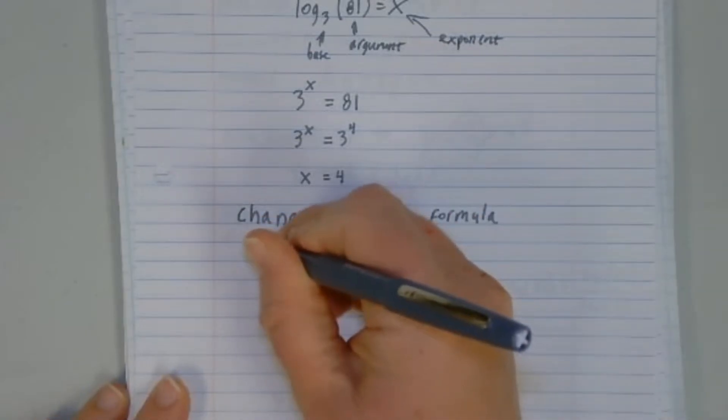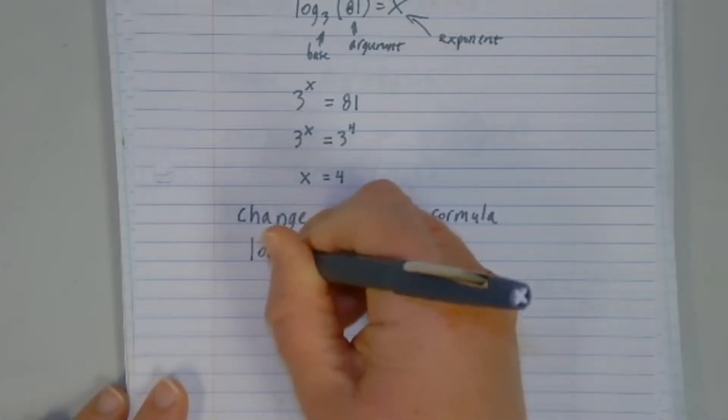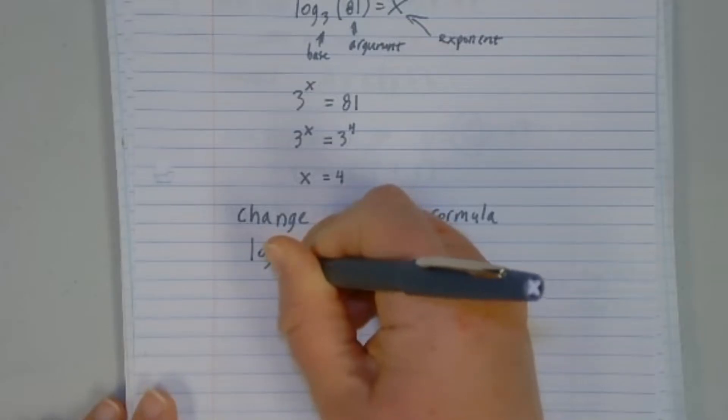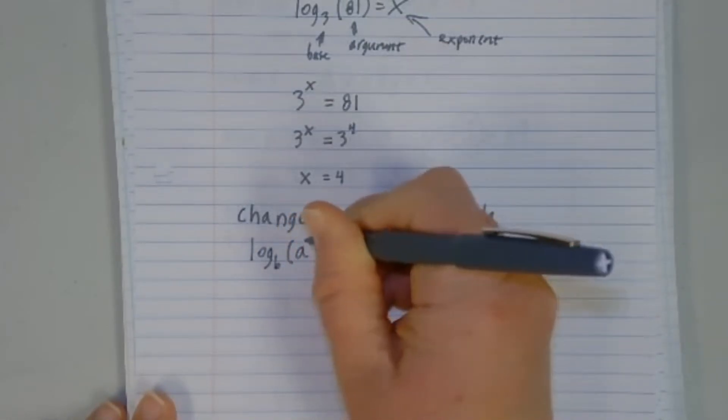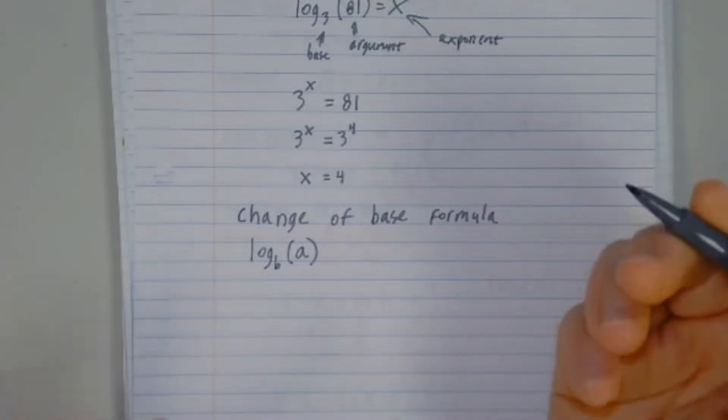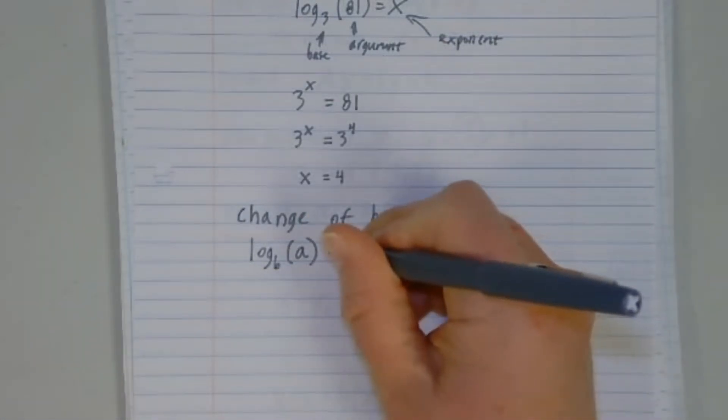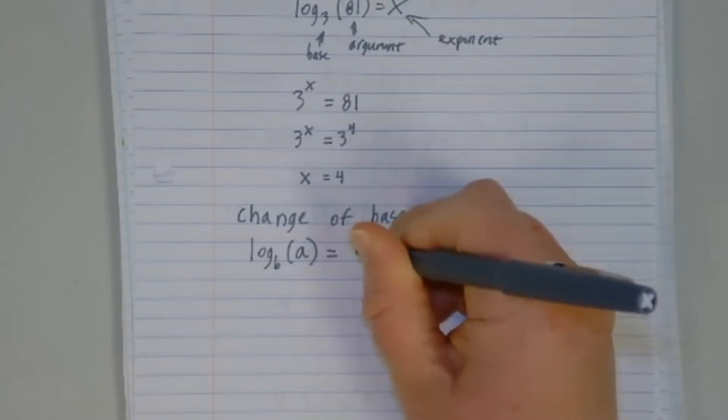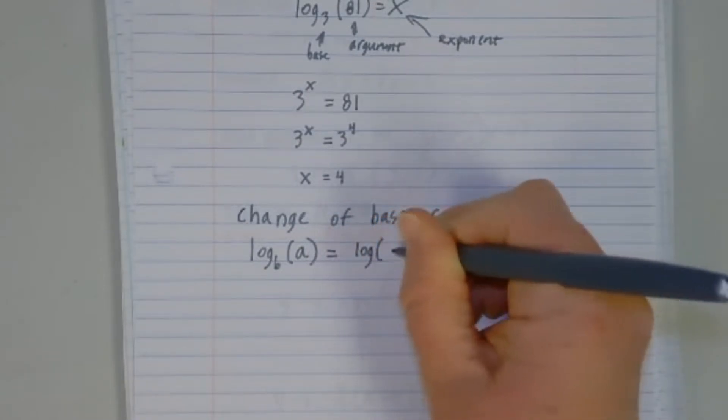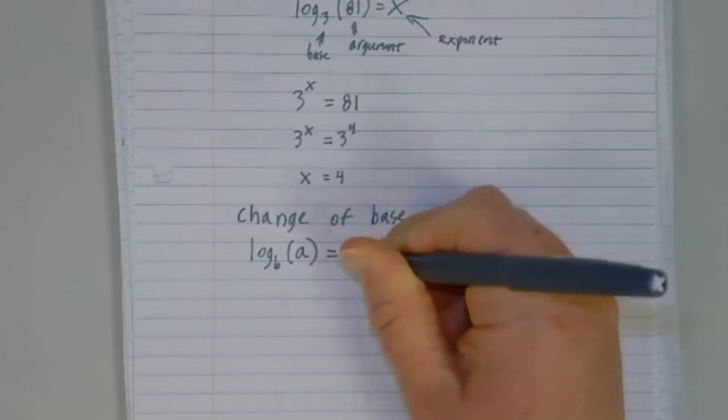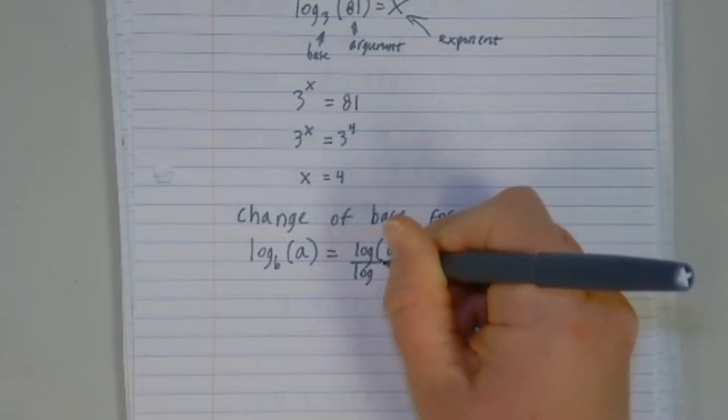And what this says is that if I have a log base B of A for argument, that's the same as taking the log base 10 of that argument divided by the log base 10 of that base.